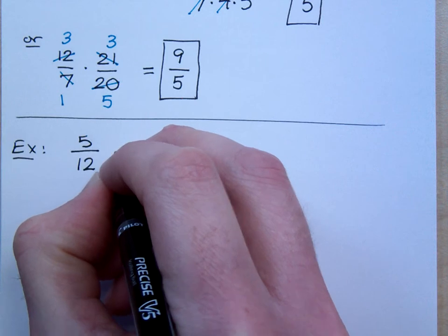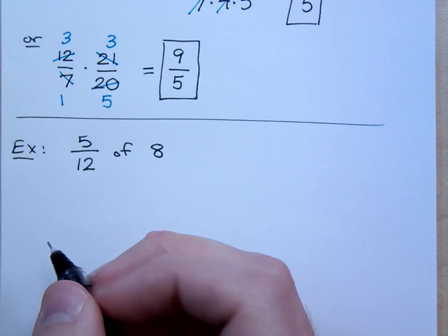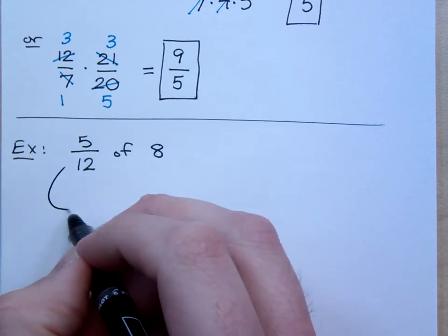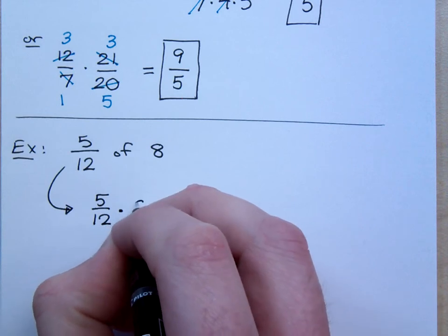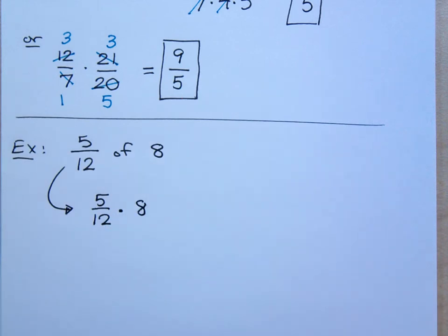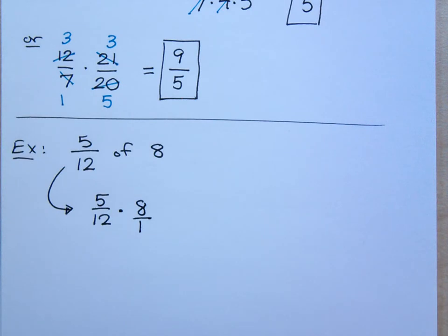If I were to say 5 twelfths of 8, remember, whenever we have the word of here with fractions, what does of mean? Of means multiplication. So 5 twelfths of 8 really means 5 twelfths times 8. But we're supposed to be talking about multiplying fractions, but is 8 a fraction? No. But can you write it as a fraction? Yeah. The easy way to make any whole number a fraction is to put it over 1. Because what is 8 divided by 1? 8.